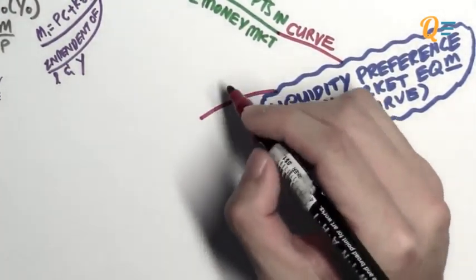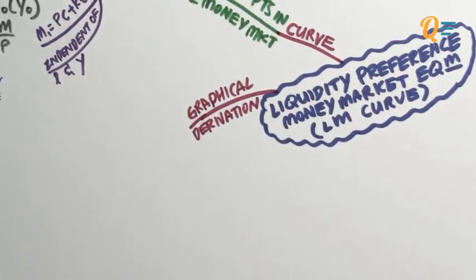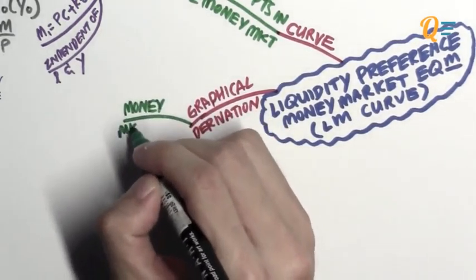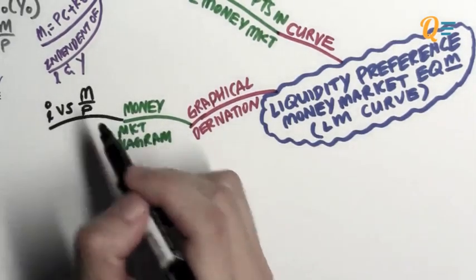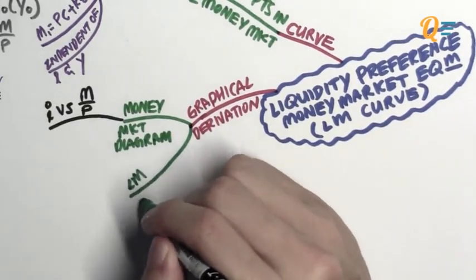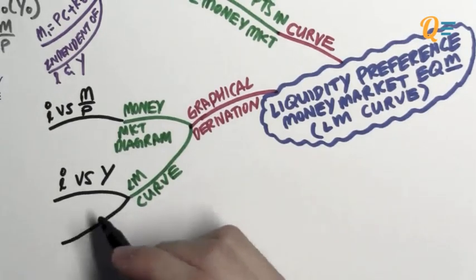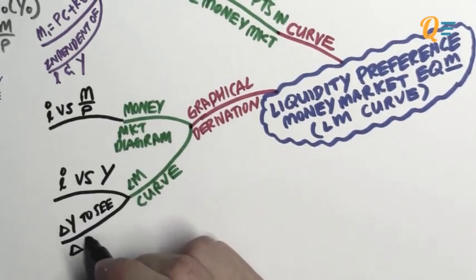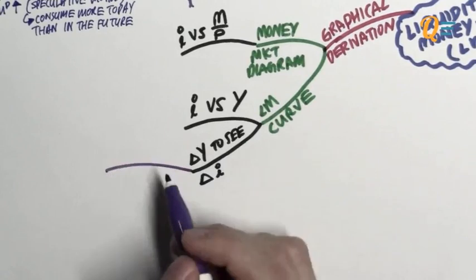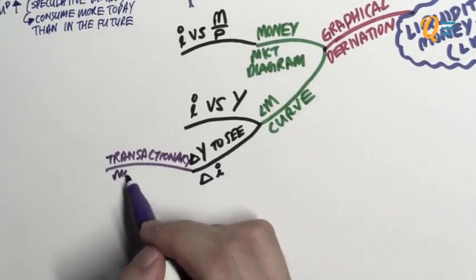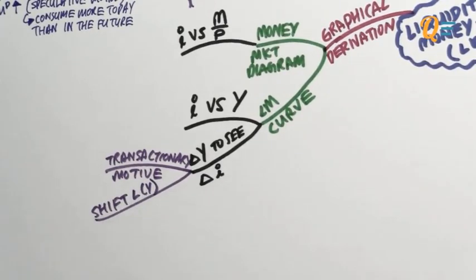That was the basics of the money market equilibrium diagram. Now let's look at the graphical derivation of the LM curve, which shows all the equilibrium points in the money market. You're going to need the money market diagram — a graph with nominal interest rates against real balances — and use that to derive your LM curve, which will be plotted on a graph with interest rates against GDP, the same as the IS curve. You need to change the income level to see a change in interest rates, which shows the transactionary motive for holding money in play.